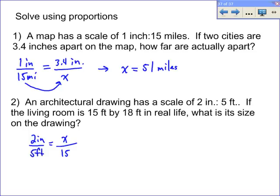So, we do our cross multiplying, we get 5x equals 30. And if you divide both sides by 5, you get x equals 6 inches. So, in the architectural drawing, the living room is 6 inches long.